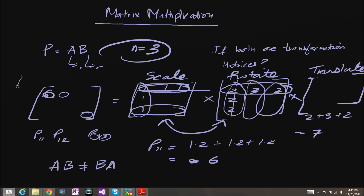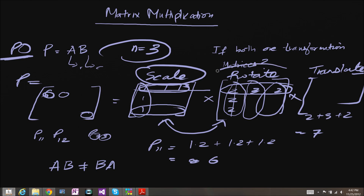Then that product P will chain together the original sequence of the transformations. So let's just say A was a scale, B was a rotate, and C was a translate. Then the product P, if applied to an object's coordinates — let's say object O — what applying the product to the object's coordinates would do is first scale the object, then rotate the object, then translate the object.